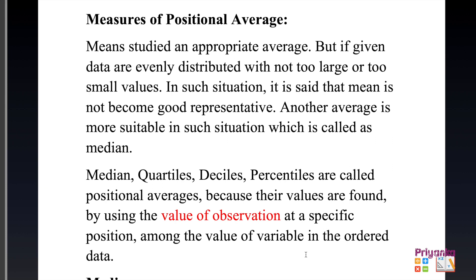In section 3.4, we will learn about measures of positional average. Till exercise 3.3 we learned about mean, where mean is an appropriate average. But if the given data are evenly distributed with not too large or too small values, mean does not become a good representative. Another average more suitable in such situations is called the median.